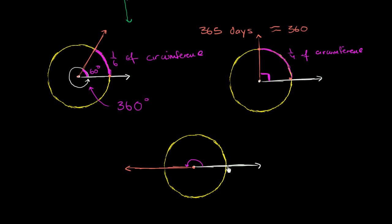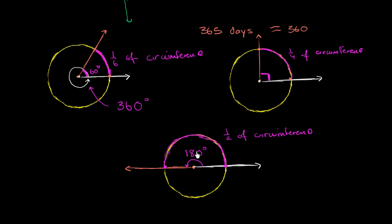Let's think about where the rays intersect the circle — they intersect there and there. The arc that connects them is literally half of the circumference of the circle, half of the way around. So this angle is going to be half of 360 degrees, which is 180 degrees. When you view it this way, these two rays share a common endpoint and together they're really forming a line.